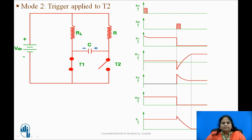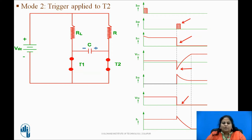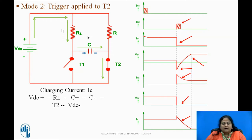In mode 2, T2 is triggered. When a triggering pulse is applied to T2, it turns on and acts as a closed switch. Voltage across T2 becomes on-state voltage. The negative polarity of the capacitor C is applied to the anode of T1 and positive polarity of C gets applied to the cathode of T1. This makes T1 reverse biased and the current through T1 becomes less than the holding current. After the turn-off time, T1 turns off. The capacitor now starts charging again through the load and its polarity gets reversed, through the path Vdc+ → RL → C+ → C− → T2 → Vdc−. At the end of mode 2, T1 is off, T2 is on, and Vc equals −Vdc.